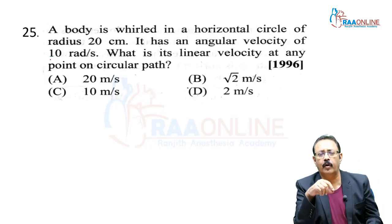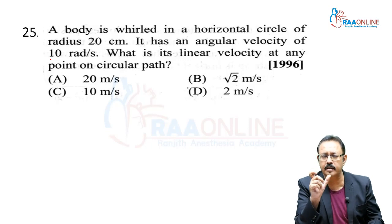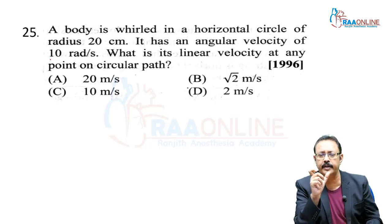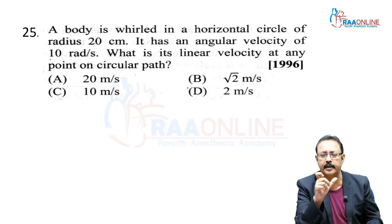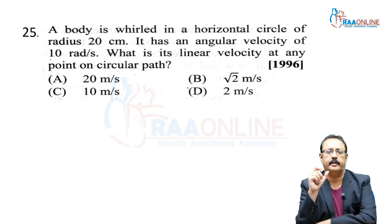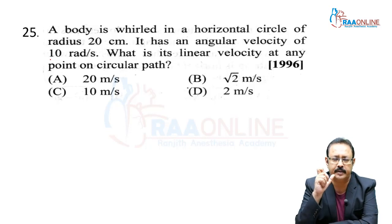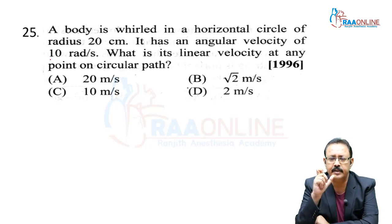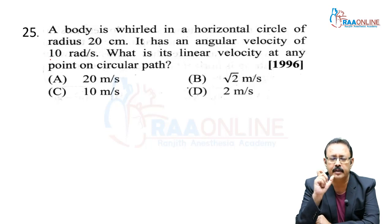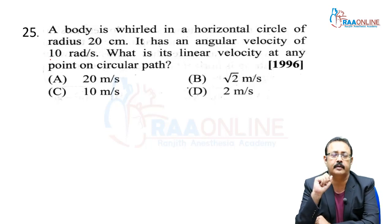Next: A body is whirled in a horizontal circle of radius 20 cm. It has an angular velocity of 10 radian per second. What is its linear velocity at any point on the circular path?